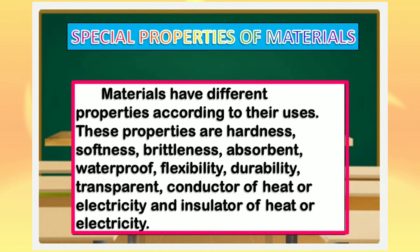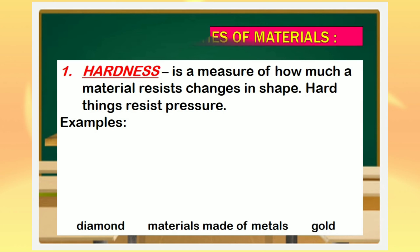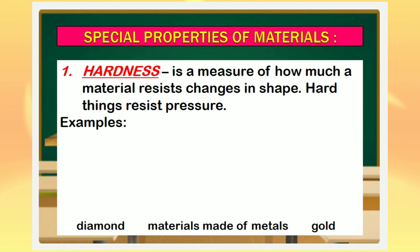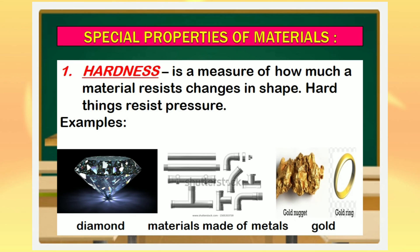Materials have different properties according to their uses. These properties are hardness, softness, brittleness, absorbent, waterproof, flexibility, durability, transparent, conductor of heat or electricity, and insulator of heat or electricity. The first special property of material is hardness — it is a measure of how much a material resists changes in shape. Hard things resist pressure. These are some examples of materials that have hardness.